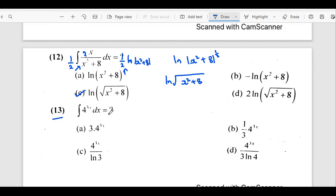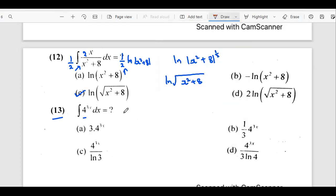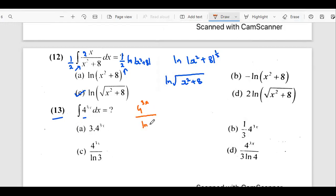Next question. So here we have the integration of 4^(3x) with respect to x. Now for this, we need to follow the general rule. We know that if we have a^x in the power, the integral is a^x / ln(a). It is going to be d. While selecting the answer, it is going to be d.